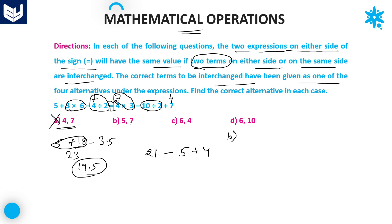Option B: 5 and 7 are interchanged. If 5 and 7 are interchanged, then 5 is replaced with 7 and 7 is replaced with 5. Only two changes occur. Now the first priority will be division: 4 divided by 2 equals 2.